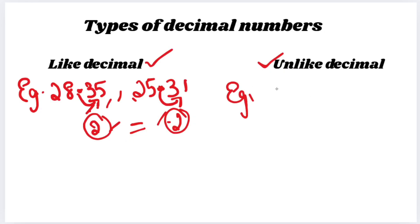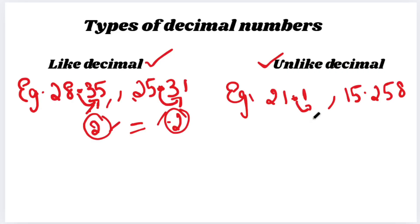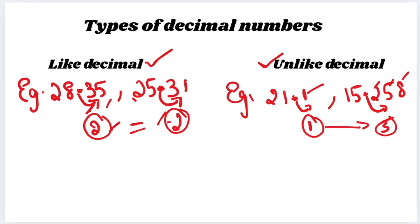What is unlike decimal? If these numbers are not the same, we call it unlike decimal. For example: 21.1 and 15.258. Towards the right of the decimal in 21.1, there is only one number. In 15.258, there are three numbers. Are they the same? No — both are not equal. So when both are not equal, we call it unlike decimal. We will see some exercise sums in the next sections.